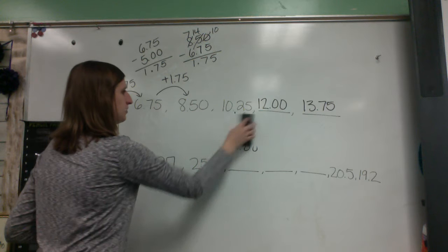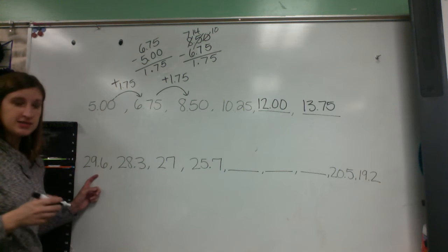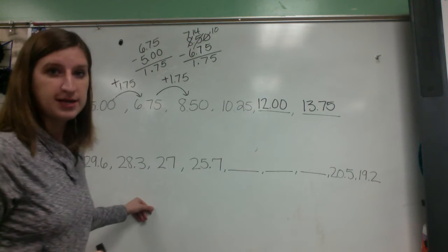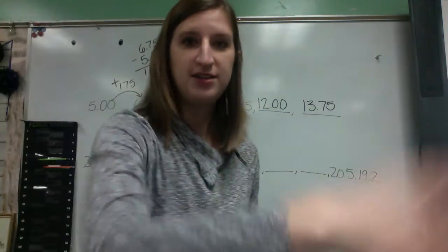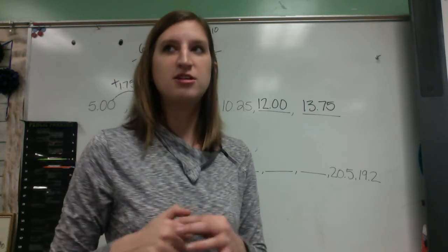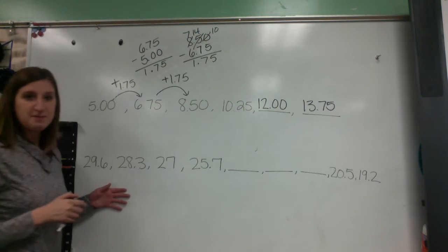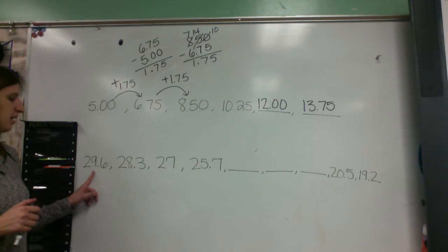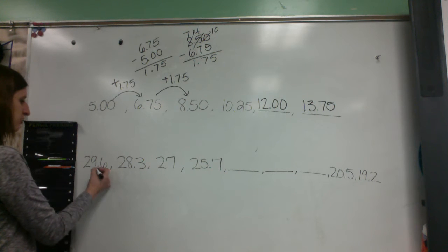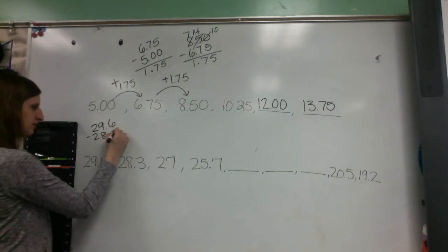We're going to bump it up a notch. We're going to talk about the next problem and see what's going on here. I'm going from 29.6 down to 28.3. So if I'm going down, then that means I am subtracting. So it's going down each time. Well, we need to figure out how much is going down each time. So in order to do that, I need to do 29.6 minus 28.3.